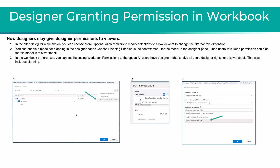As a designer, you can grant permission within the workbook in a few different ways. In the filter dialog for a dimension, you can choose more options and then allow viewers to modify the selections to allow viewers to change the filter for that dimension. You can also enable planning for the model in the designer panel by choosing plan and enabled in the context menu.